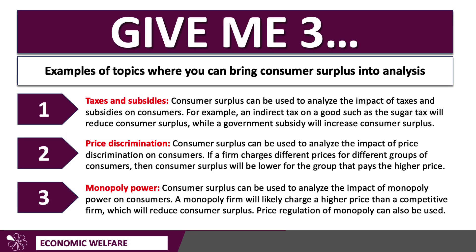My third example is monopoly. A monopoly firm will typically charge a higher price than a competitive firm. As a result, other things being the same, that will reduce consumer surplus. The monopoly is using its market power to set prices above marginal cost, extracting consumer surplus and turning it into producer surplus. You can then extend the analysis by looking at, for example, the impact of a price cap — some form of price regulation of monopoly could also be used.